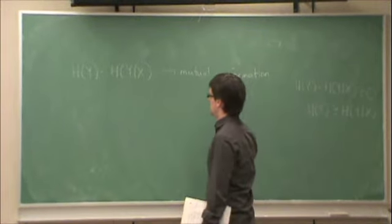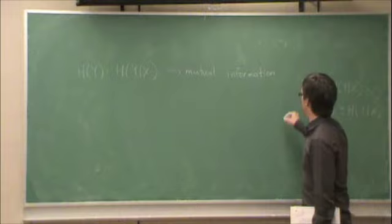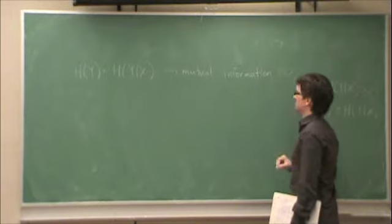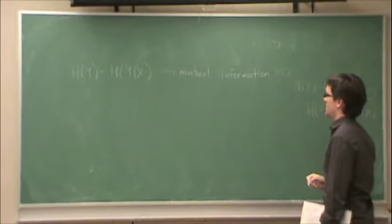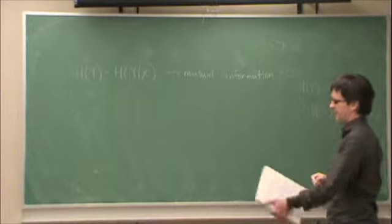But furthermore, we just showed that this mutual information must be greater than or equal to zero. Because it doesn't make sense that the maximum rate at which you can transmit would be negative.